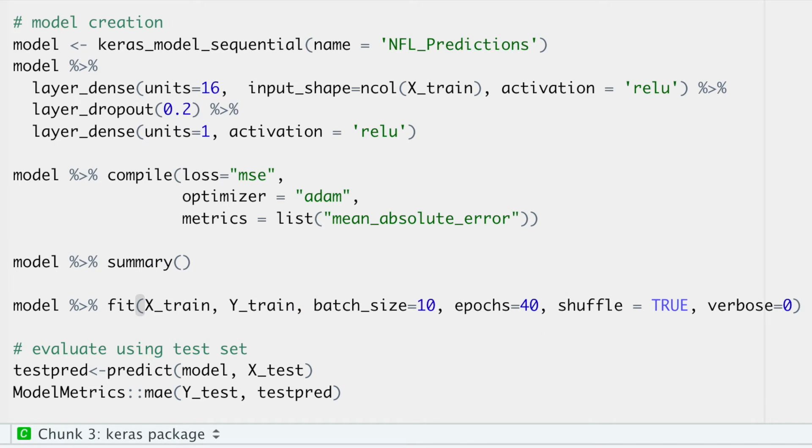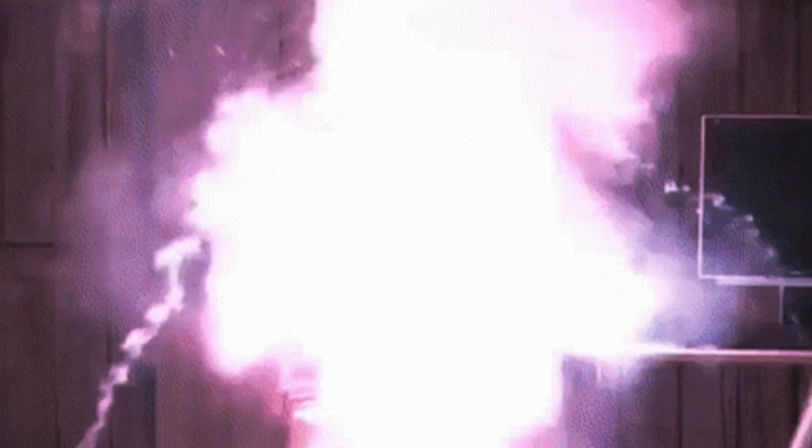Then when I'm happy with that, I'll go back and then start changing the batch sizes and epochs. Now this is just how I do it, it's actually kind of an art form. I don't typically use grid search unless I'm cool with my laptop running and getting overheated for God knows how long.